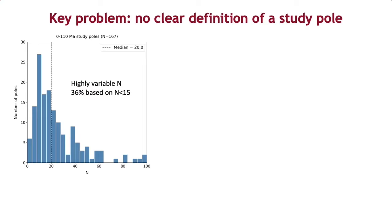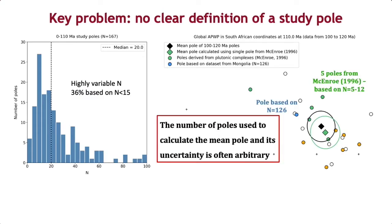However, we identify as a key problem that there is no clear definition of a study pole. By analyzing the poles of the last 110 million years, we find that the number of independent measurements of the field is highly variable. For example, five poles from plutonic complexes of slightly different age all contribute to the mean pole, and these poles are just based on 5 to 12 sites.